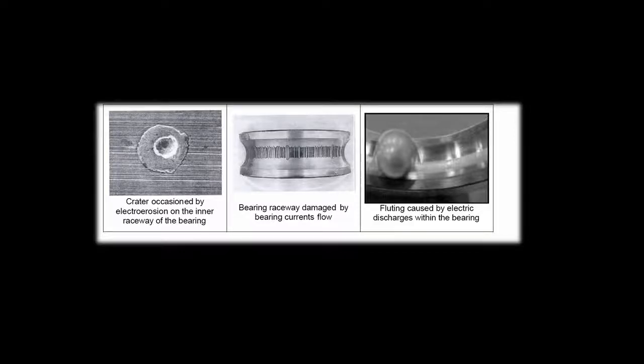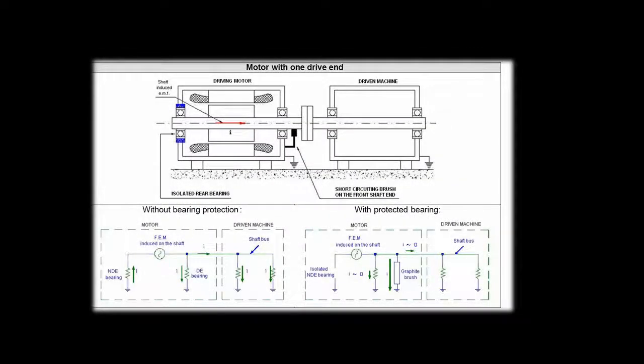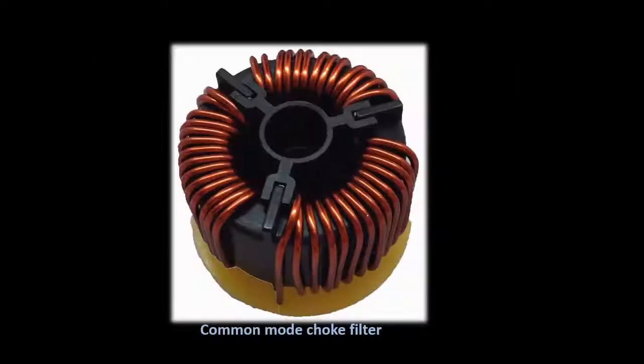A solution to this is to use insulated bearings, and provide an alternative path to earth using a slip ring and brush commutator. Certain filter constructions can also act to dampen out the common mode voltage.